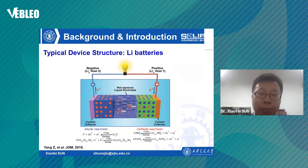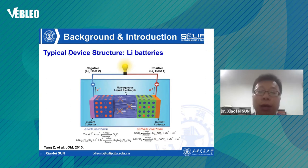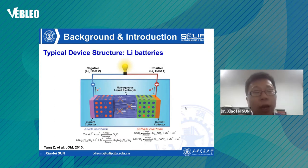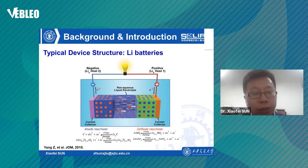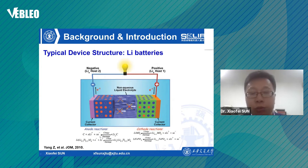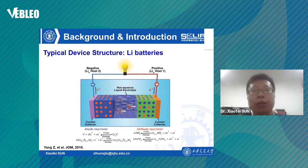Take lithium-ion battery as an example. The typical device structure is composed of cathode, anode, electrolyte, separator, and cabinet. Lithium ions — as charge carriers — are inserted or extracted in the electrode materials during charging and discharging, like a rocking chair mechanism.